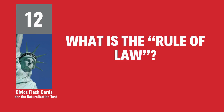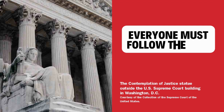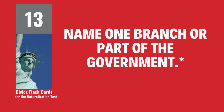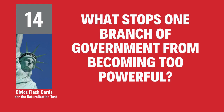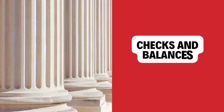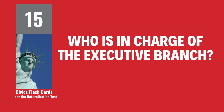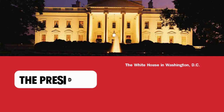What is the rule of law? Everyone must follow the law. Name one branch or part of the government. Congress. What stops one branch of government from becoming too powerful? Checks and balances. Who is in charge of the executive branch? The President.